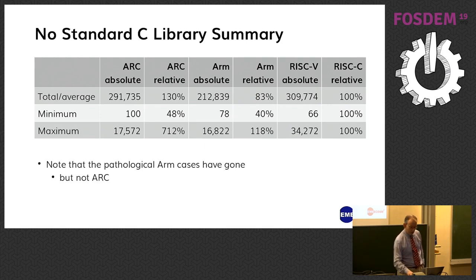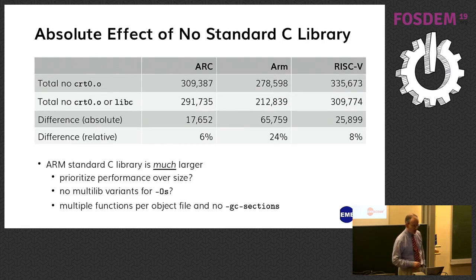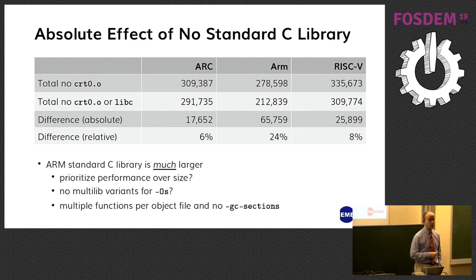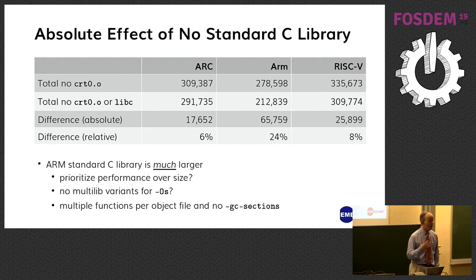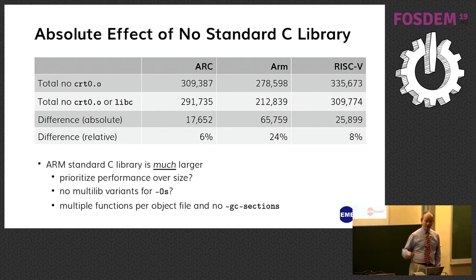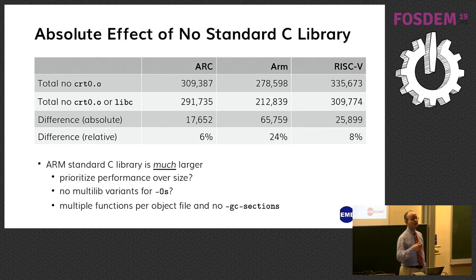The pathological cases have gone away for ARM, suggesting there is some pathological code in the C library linked into one or two programs. The problem hasn't gone away for ARC — its worst program is seven times as big as the equivalent RISC-V program. ARM is now starting to look really quite good: 17% better than RISC-V.